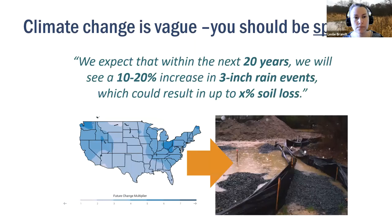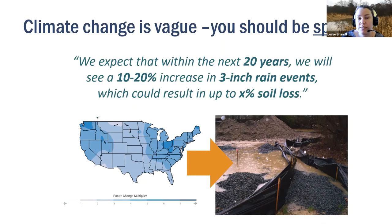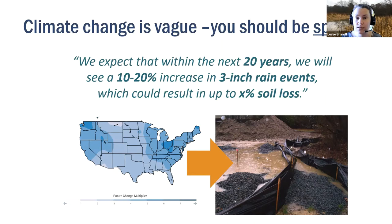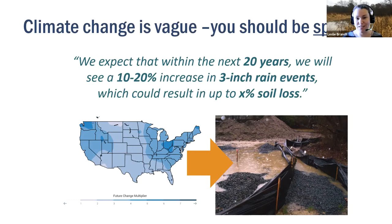Try to be as specific as you can. People tend not to engage with things that are really vague, and climate change can sometimes be very vague. So if you've got specific information, share it. For example, instead of saying that precipitation is going to increase, you could say we expect that within the next 20 years we're going to see a 10 to 20% increase in three-inch rain events, and that's going to lead to a certain percentage of soil loss. Obviously if you're talking with K-through-12 students versus professionals you'll vary the detail level, but tailor your description to your audience as specifically as possible.